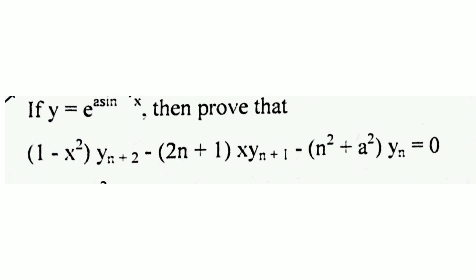If y is equal to sin inverse x, then prove that (1 minus x squared)·y_(n+2) minus (2n plus 1)·x·y_(n+1) minus n squared·y_n is equal to 0.